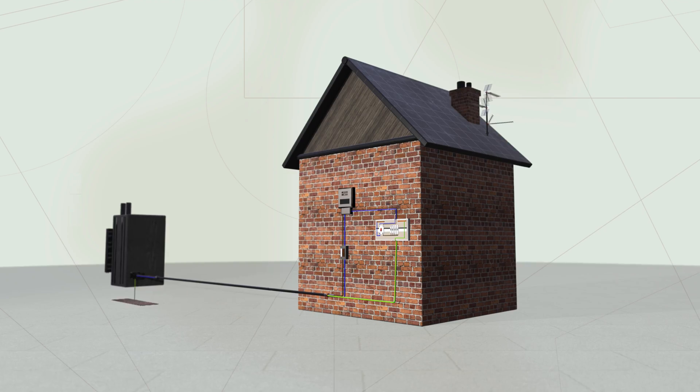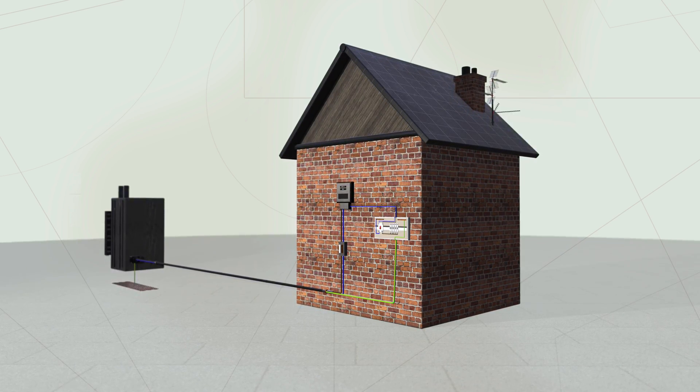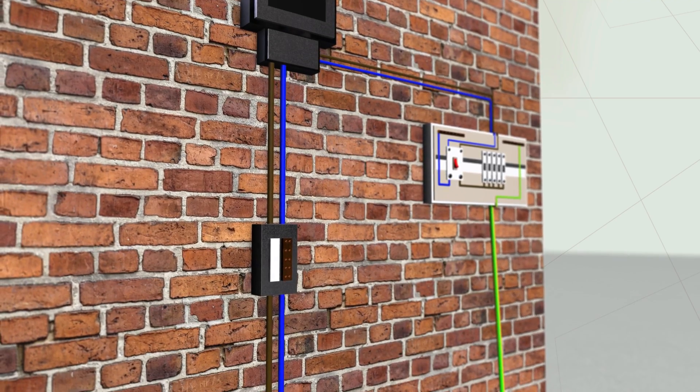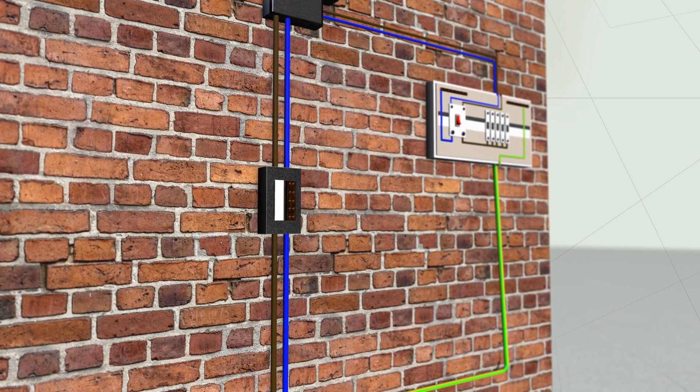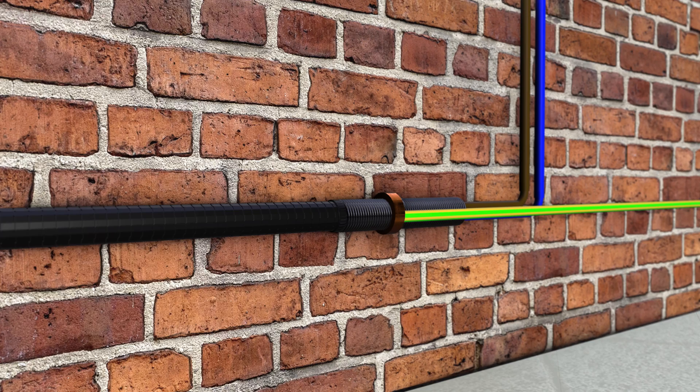Let's start with TNS. TNS stands for Terra Neutral Separate. From the distribution transformer all the way to the consumer's installation, the neutral and the earth are separate conductors. In a TNS arrangement, the earth and neutral are separate conductors from the distribution transformer up to the consumer's installation. The supply earth is normally the metallic sheath or armour of the supply cable.